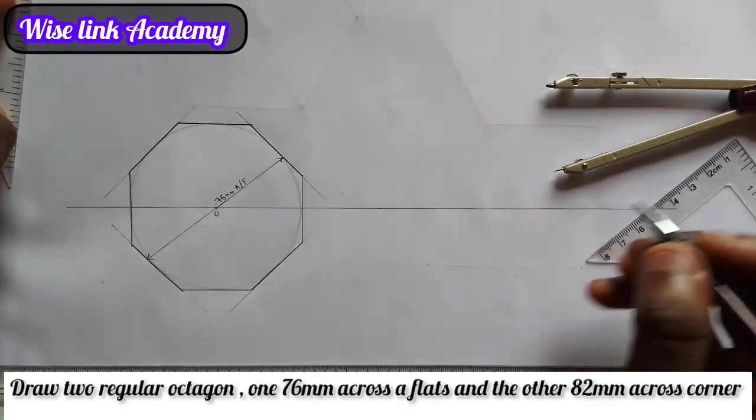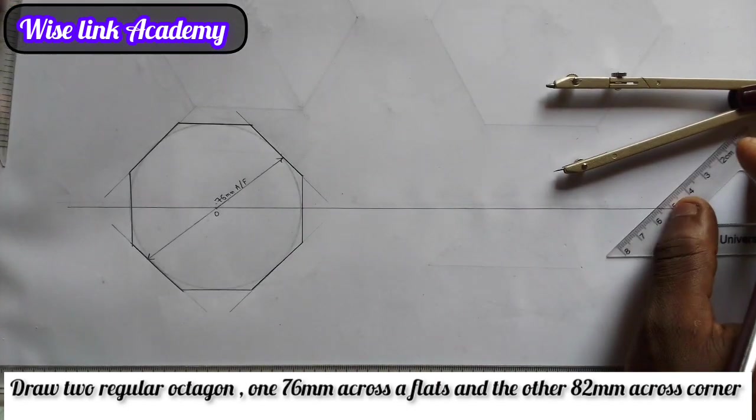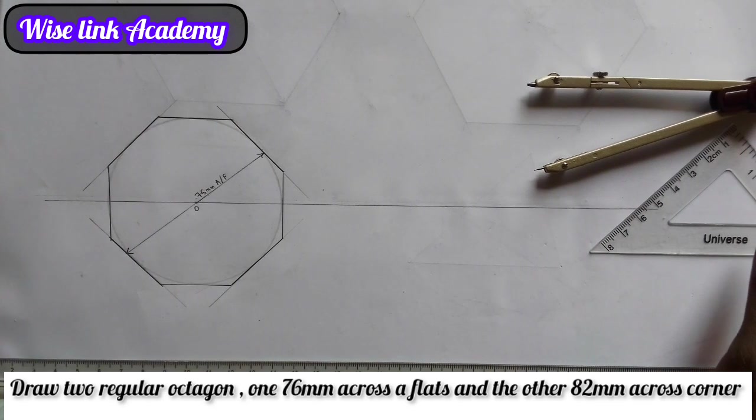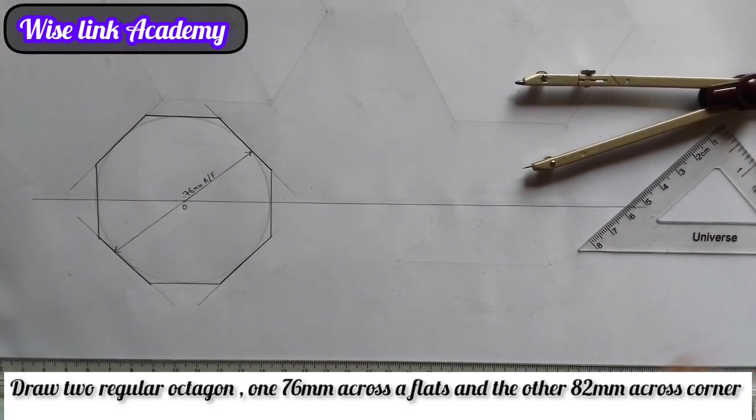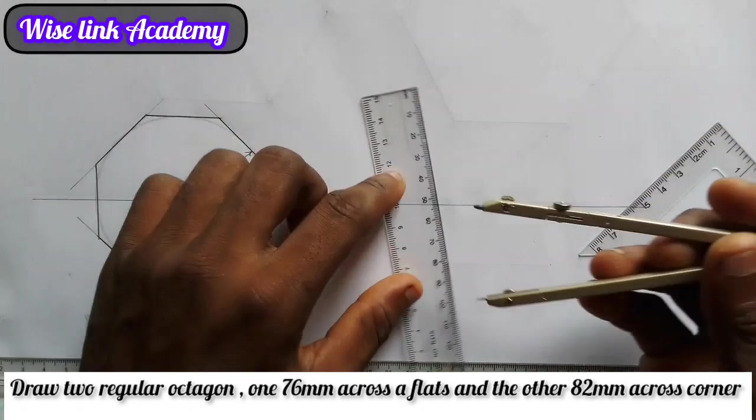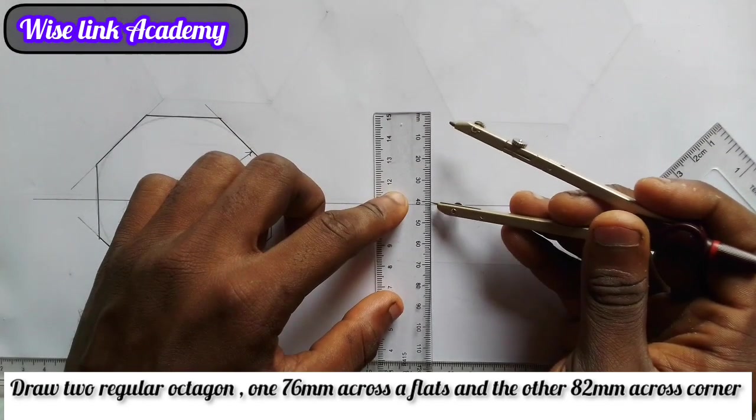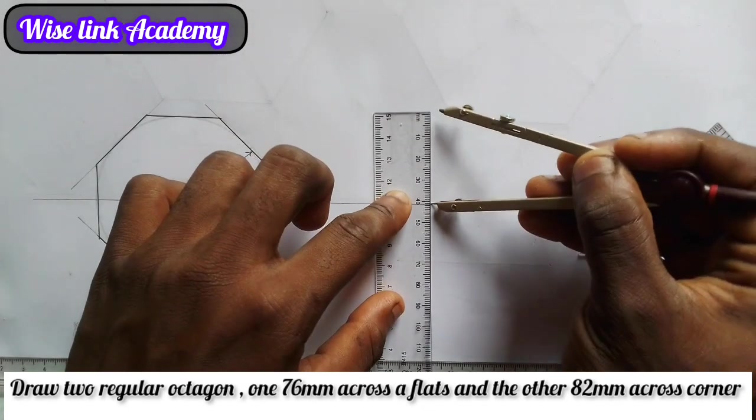Now my next task is the other one. I'm given two regular octagons, the first one is 76mm across flats and the other is 82mm across corner. So 82 divided by 2, I have 41mm. I'll measure 41 on the meter rule. From this point to this point is 41mm.